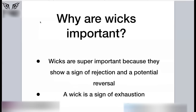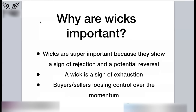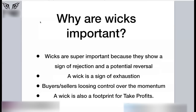Buyers or sellers are losing control over momentum, so we can enter based on momentum loss. This means we'll have a shorter stop loss, more rejection, and more confluences that a trade will go in our direction. A wick is also a footprint for take profits, which I'll show you with chart examples. Wicks are super easy to use for identifying your stop loss — you don't need zones or anything else, just that wick.